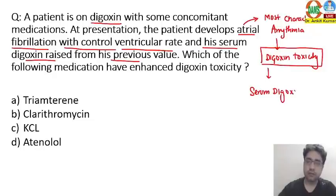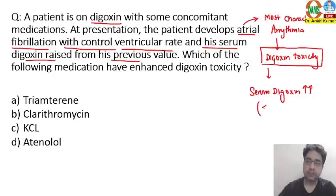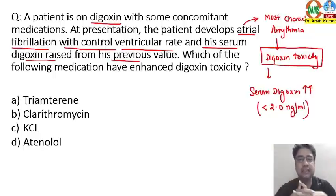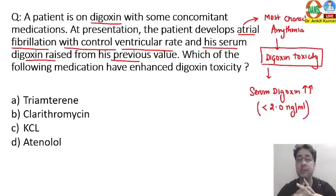Now remember, what should be the serum level of digoxin? The serum level of digoxin should always be less than 2.0 nanogram per mL. This is additional information, but in this case it is raised, indicating digoxin toxicity.